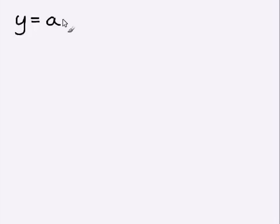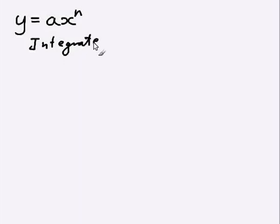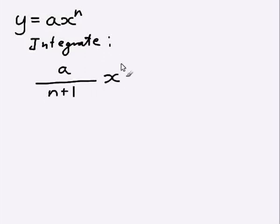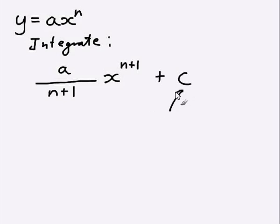Integration is like the reverse of differentiation, and like differentiation there are some rules for doing it. One of the first rules you need to know is if you have a general function y equals ax to the power n, to integrate it what you do is you take the a, divide it by the power plus 1, then you've got the x, and you increase the power value by 1, so it becomes n plus 1, and you also have to add a c to the end, which is known as the constant of integration.